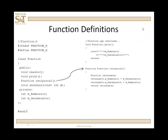Moving along, I'm going to define the reciprocal function. The reciprocal function — notice that I have scoped it — is going to return a fraction. So I'm going to declare one locally, call it returnable, and then set the numerator and denominator of returnable to be the denominator and numerator of the calling object. If I say g equals f dot reciprocal, f is the calling object. M underscore denominator and M underscore numerator refer to the denominator and numerator of f — that's going to be assigned to the numerator of returnable, a temporary local variable inside this function.